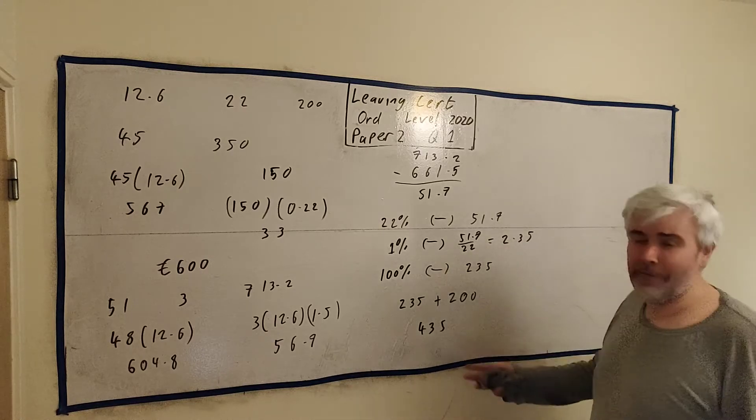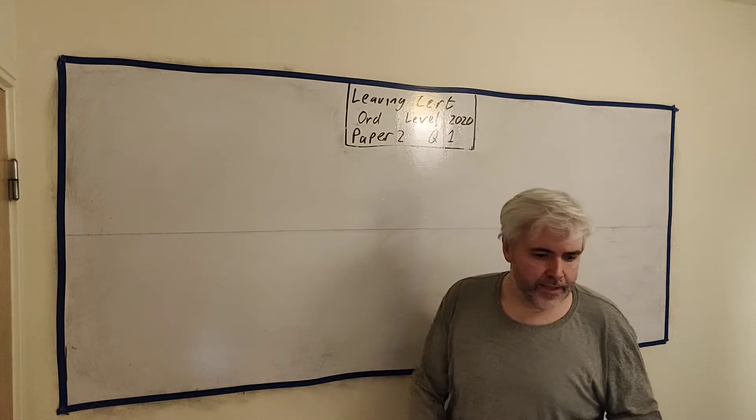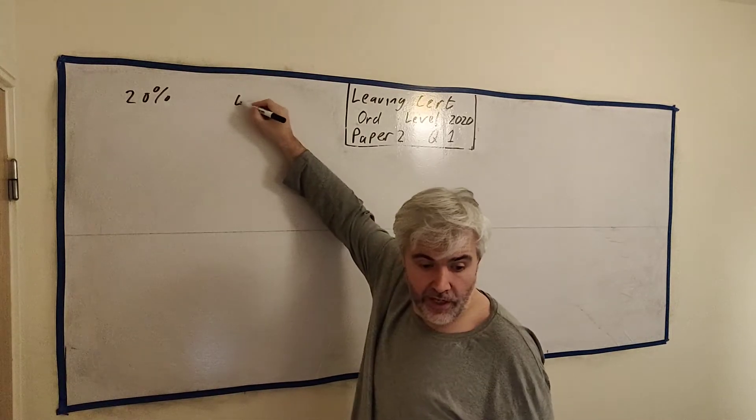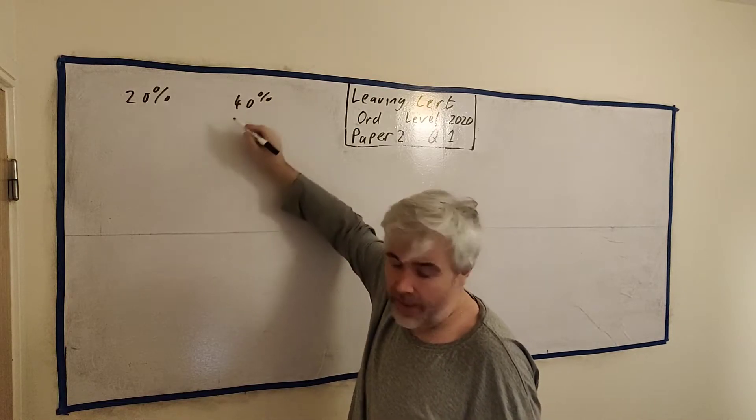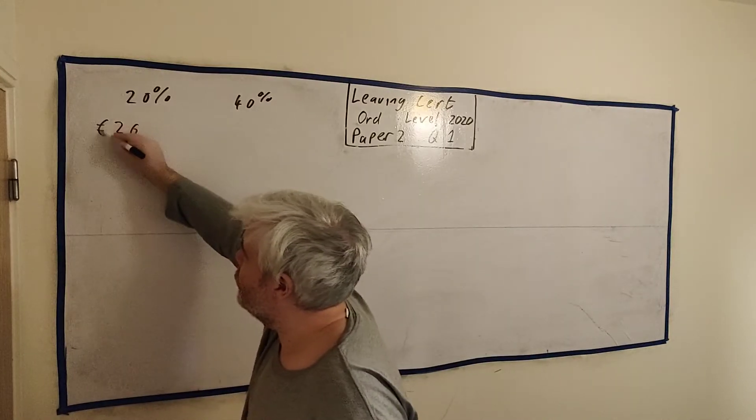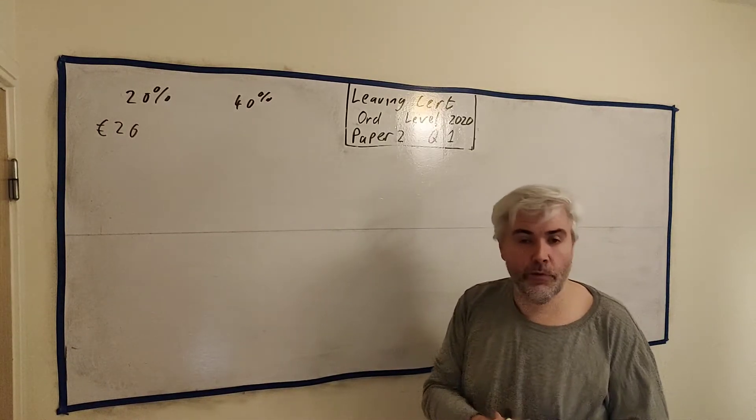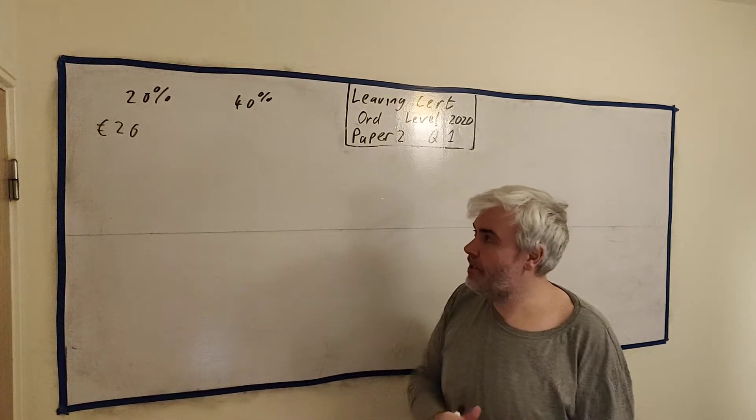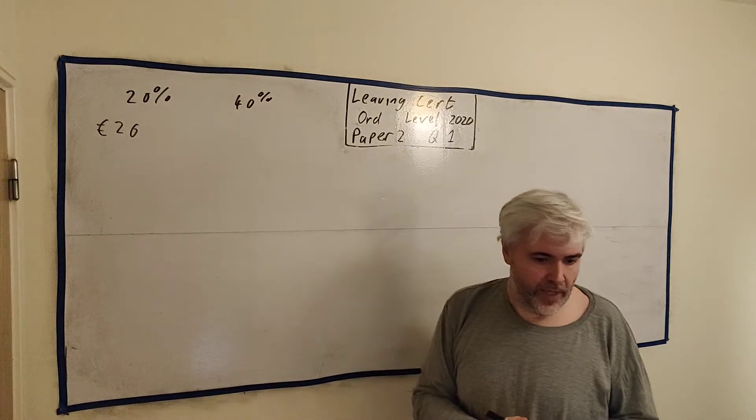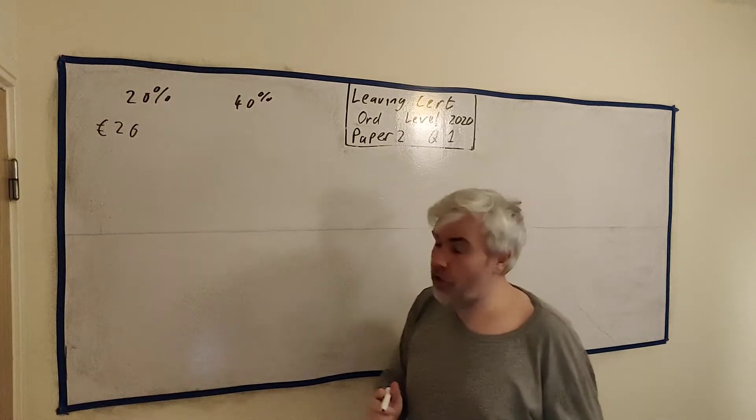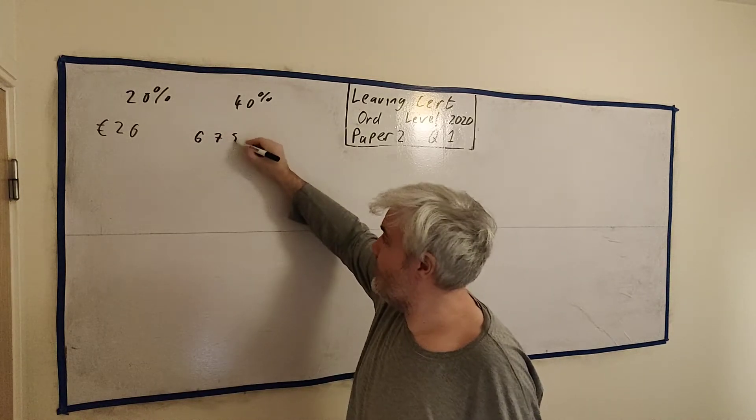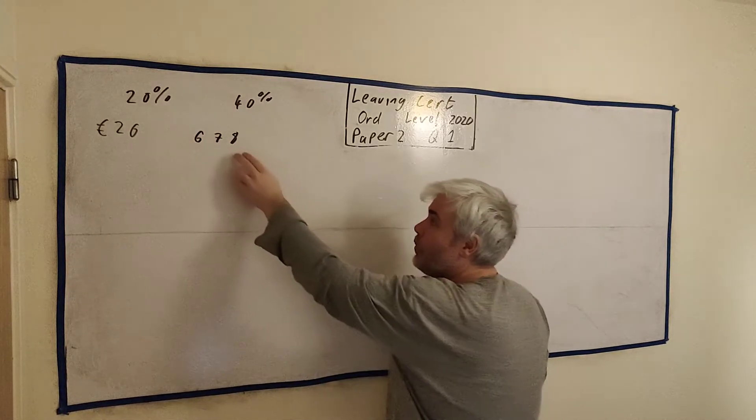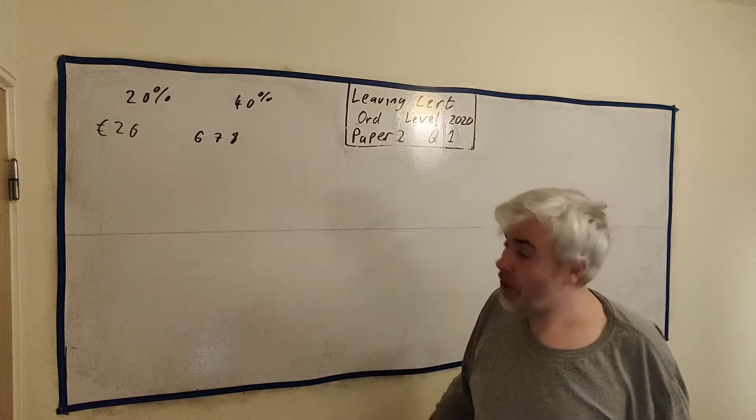Because now we're finally going to pay our taxes. We found out how much money we earn, now let's pay our taxes. They tell us that John pays tax at the standard rate of 20% and then at the higher rate of 40%. They also tell us he has a weekly tax credit. So remember, the tax credit is the number - you work out how much tax you owe and then you can take this away because this is like the number someone else pays for you. You find out how much tax you owe, somebody else will pay this for you. And what else? The standard rate cutoff is €678.